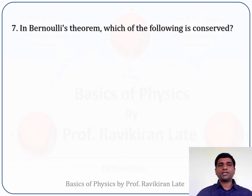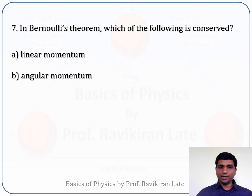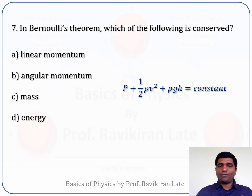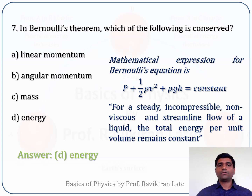Next question: in Bernoulli's theorem, which of the following is constant? Options: A - linear momentum, B - angular momentum, C - mass, D - energy. Bernoulli's theorem states that the sum of potential energy, kinetic energy, and pressure energy is constant — this is the law of conservation of energy. So energy remains constant. Option D is the correct answer.